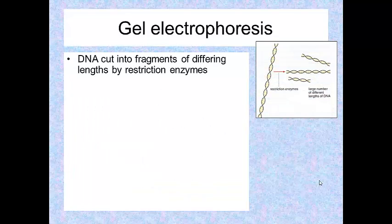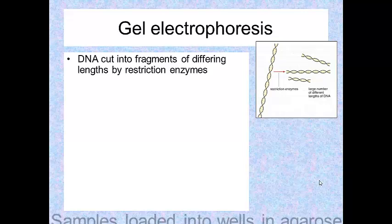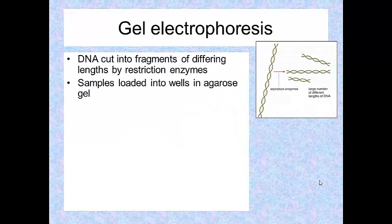Gel electrophoresis, in summary. The DNA is cut into fragments of differing lengths by restriction enzymes. Then we load our samples into wells in agarose gel.